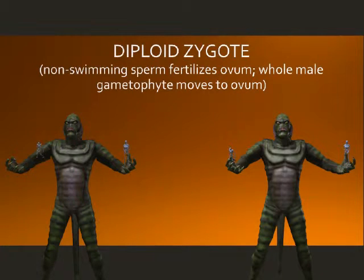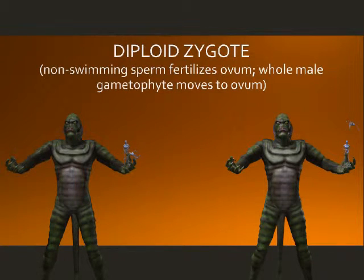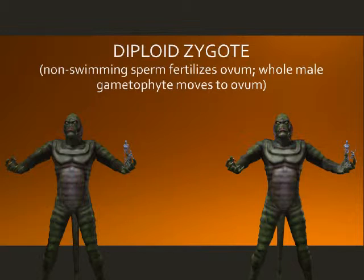When a haploid sperm fuses with a haploid ovum, a diploid zygote is produced — the first cell of the new sporophyte generation. These sperm cells do not possess flagella and grow within the pollen tube in angiosperms and in conifers. There are a few gymnosperms which still do possess flagella on their sperm. In conifers and angiosperms, the entire male gametophyte forming the pollen tube grows towards the female gametophyte, in contrast with lower forms in which only the flagellated sperm moves towards the egg.